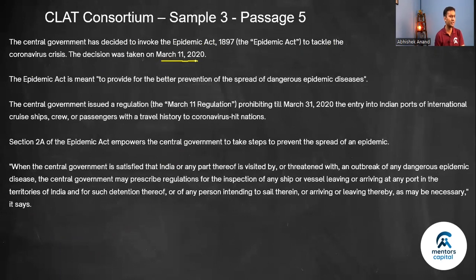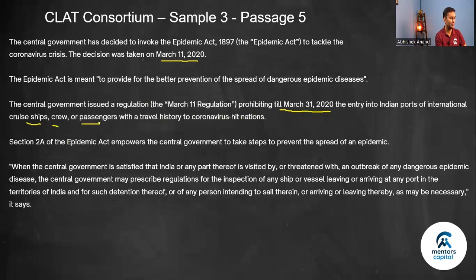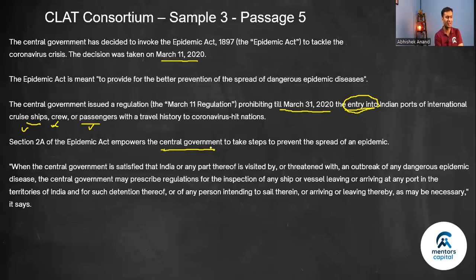The Epidemic Act is meant to provide for the better prevention of the spread of dangerous epidemic diseases. It covers entry into Indian ports of international cruise ships, crew, or passengers with travel history to coronavirus-hit nations. Section 2A of the Epidemic Act empowers the central government — not any state government — to take steps to prevent the spread of an epidemic.